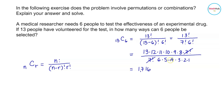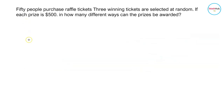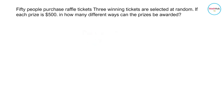So there are 1716 ways to do this. Next: 50 people purchase raffle tickets and three winning tickets are selected at random. If each prize is $500, in how many different ways can the prizes be awarded? Notice that the prize is $500 for all three winning tickets, so there is no first, second, or third prize distinction — the order does not matter.